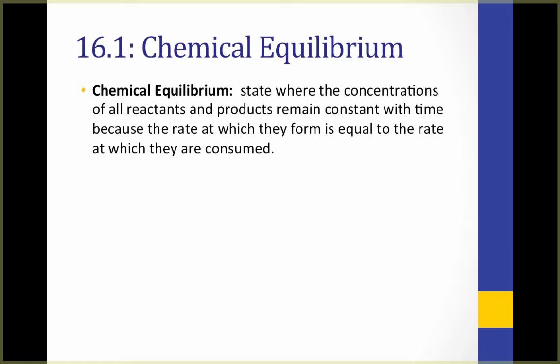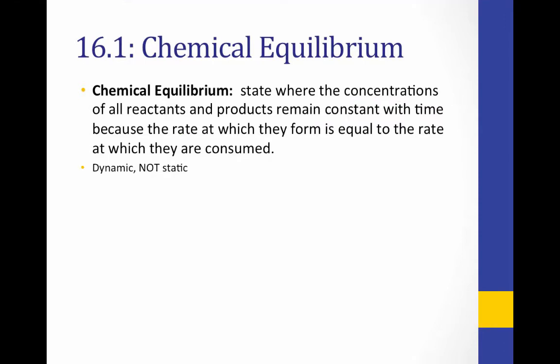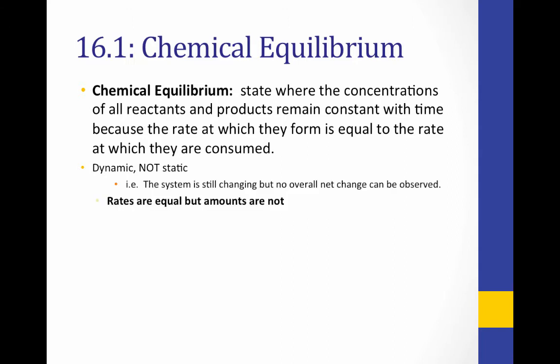Chemical equilibrium is the state of a system where all the concentrations of the reactants and the products are constant, and the rate at which they form is equal to the rate at which they are consumed. We have constant concentrations and equal rates. This is a dynamic system — not static. Both the forward and the reverse process are still happening; we just don't see any overall net change. It's important to note that the equal in equilibrium refers to the rate, but not necessarily the amount. What's important is that the rates are equal.